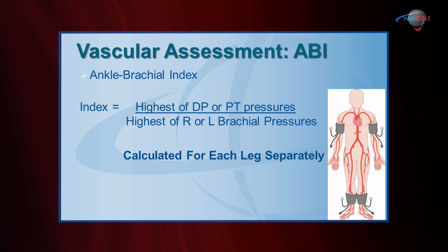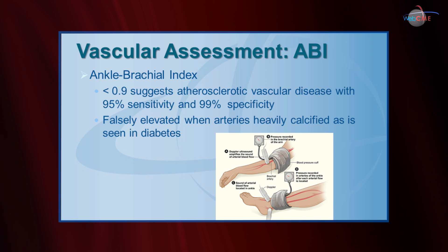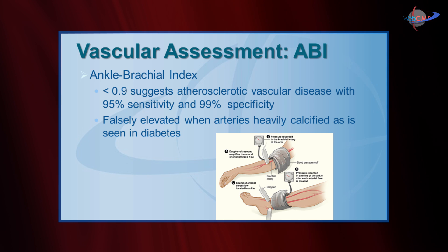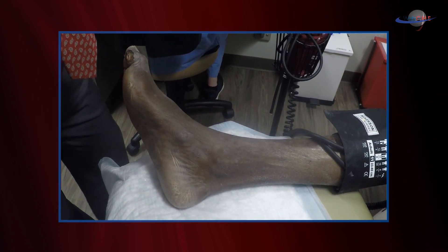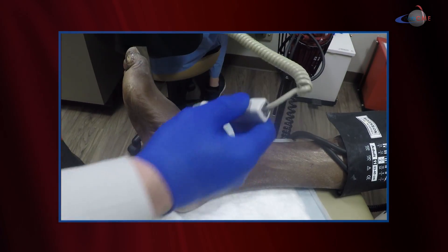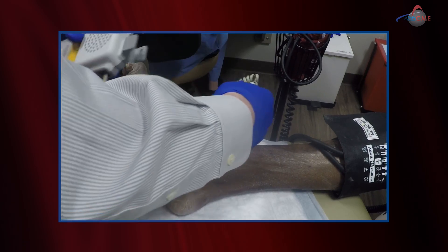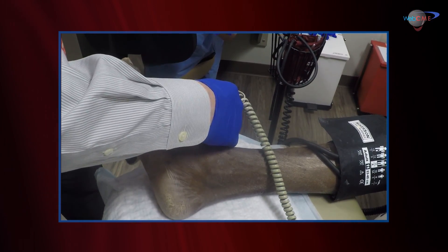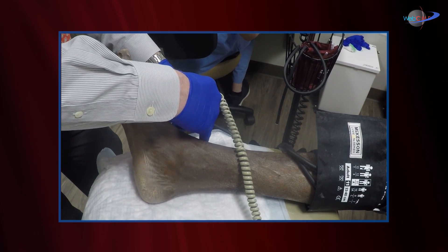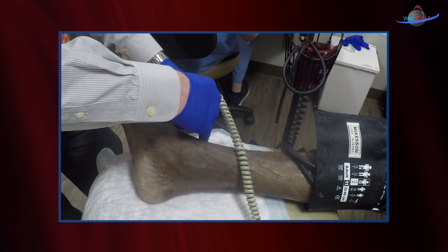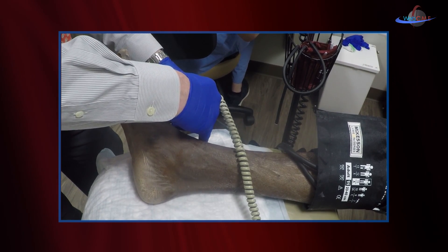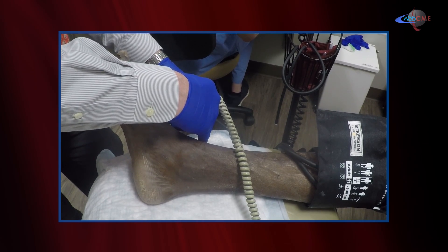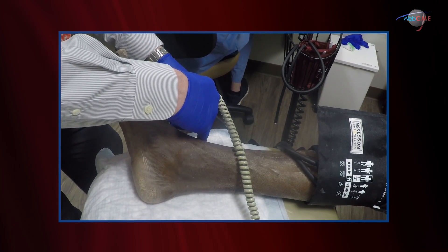We already have the blood pressure in his upper extremity. John, what was his upper extremity blood pressure? 110 over 65 — 110 systolic. We're going to take the blood pressure in this leg and I'm going to use my Doppler; it's easier than palpating. Turn this on, listen to the signal, get the Doppler signal, put the cuff on, start inflating. The expectation would be that the pulse signal disappears around 110.